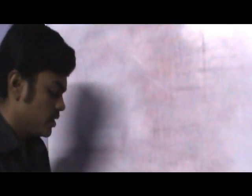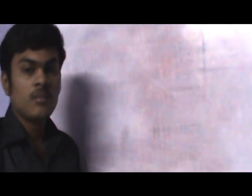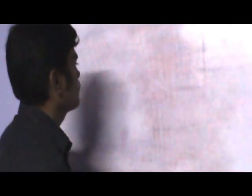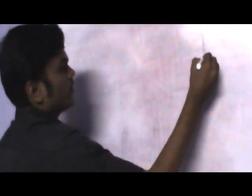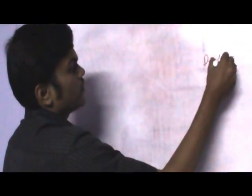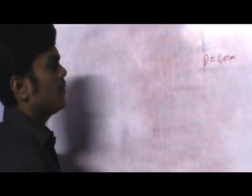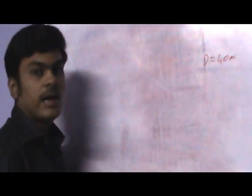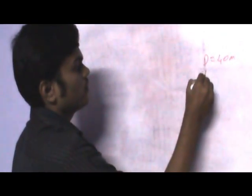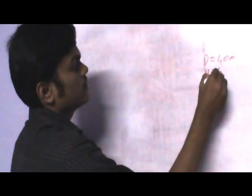Hello. Now we will look at an example of projection of a cylinder. The problem is: draw the projection of a cylinder of base diameter 40 mm and axis length 60 mm. So, the diameter of the circle is 40 mm and the height is 60 mm.